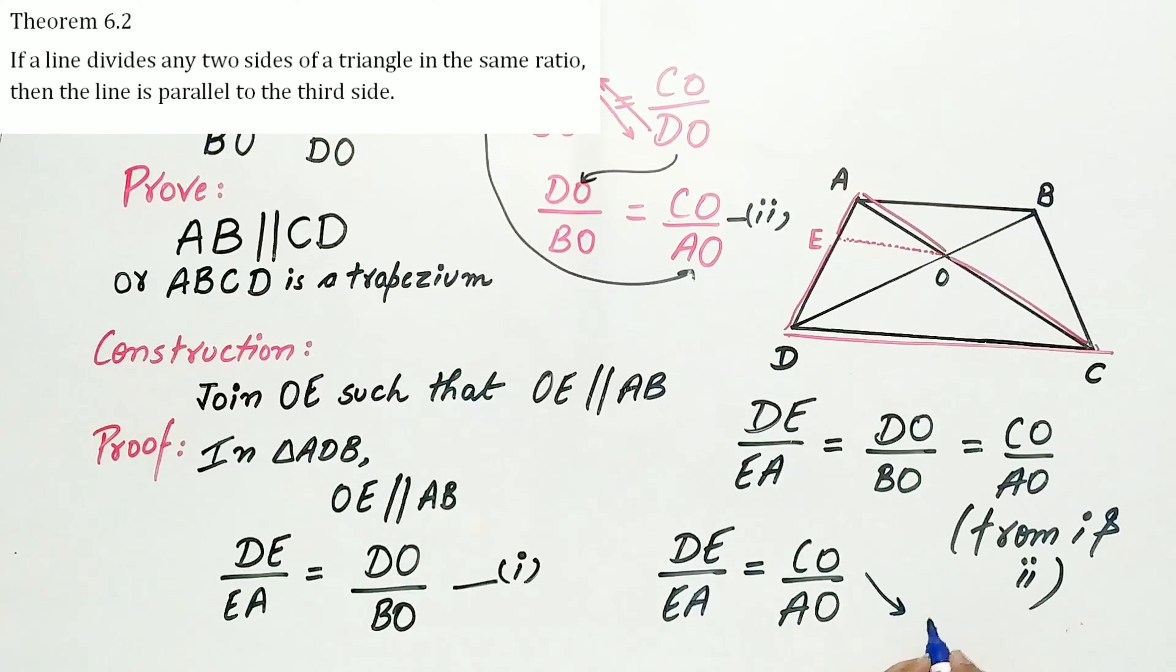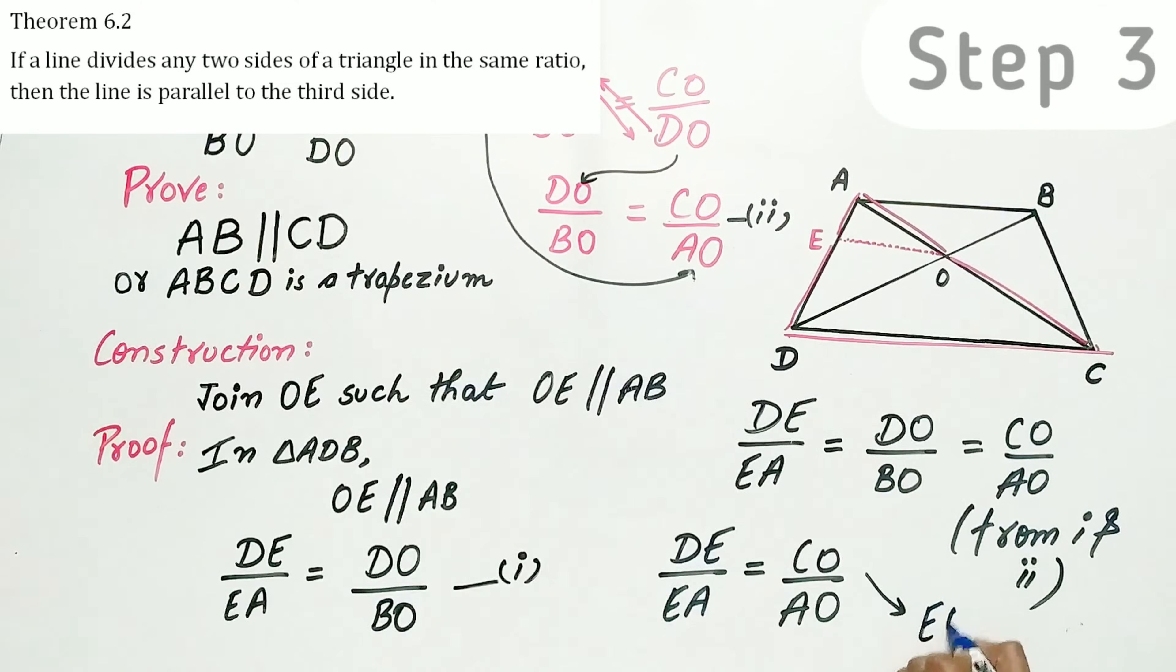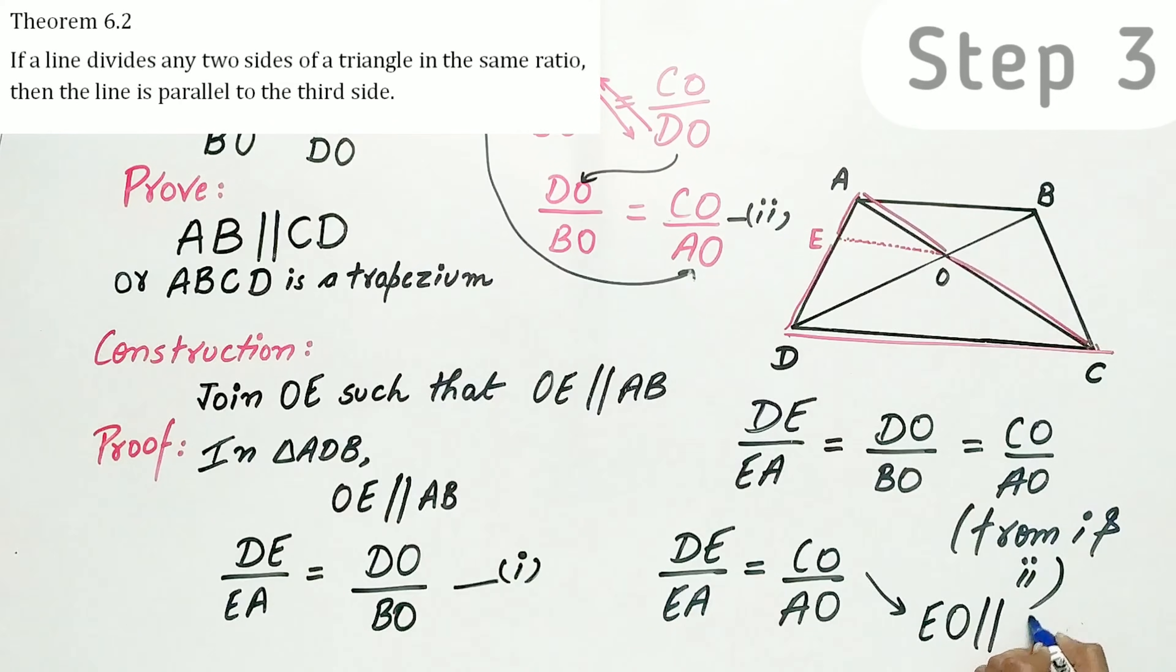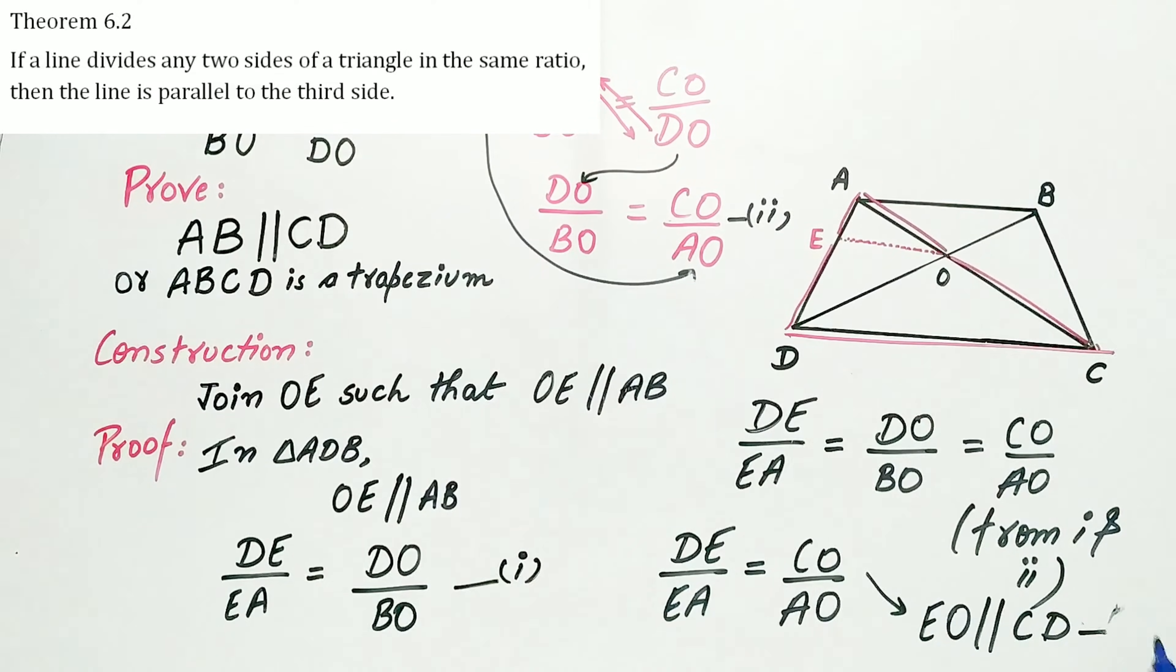Hence, by theorem 6.2, EO is parallel to CD. Let's mark it as B.